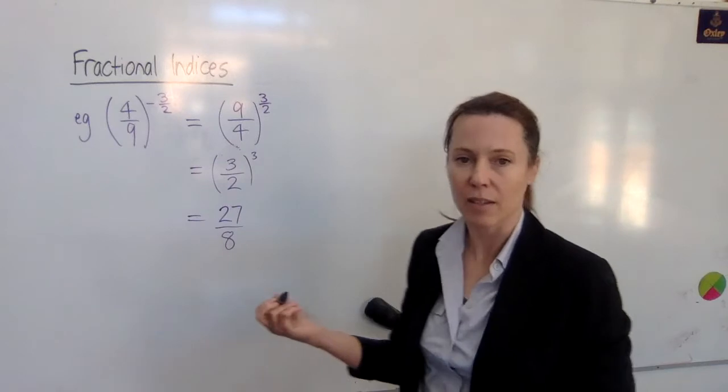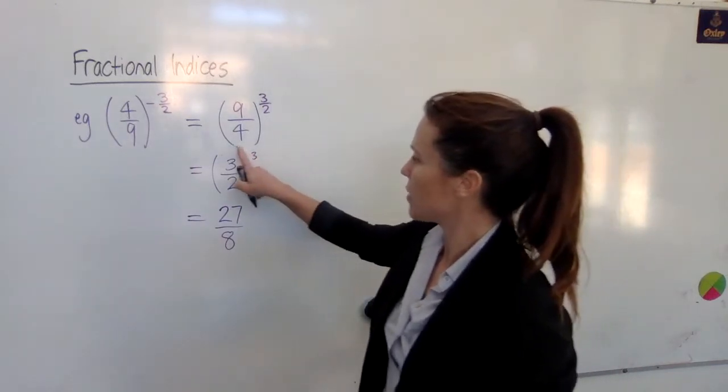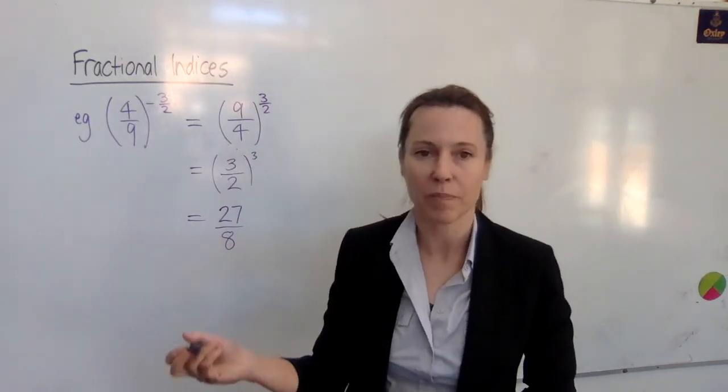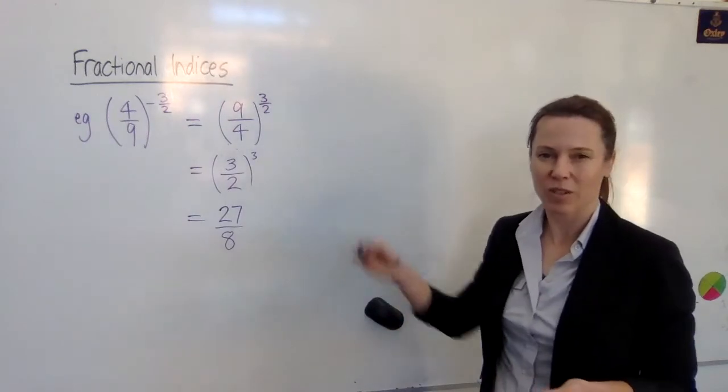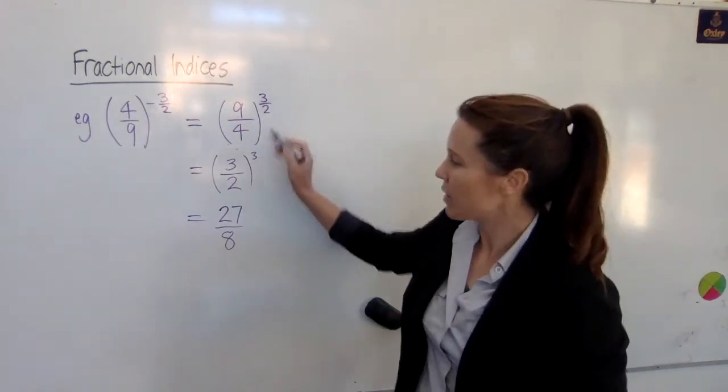Now the last thing to do is we can cube the three and we can cube the two separately, and that's our answer. We're finished. Now you can see that this is an easier way to do this question. It's not absolutely essential you do it in this order, but if you do, we have nice simple numbers that you can really quickly and easily do in your head.